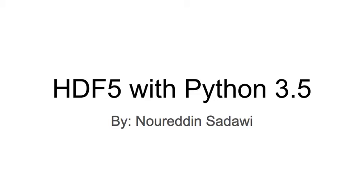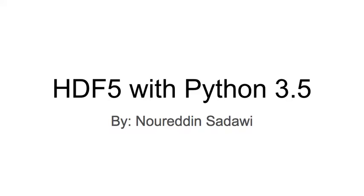The most common version these days is version 5. The file structure is quite similar to the file system directory tree — you can have a node or a trunk, and then branches or subdirectories and so on.